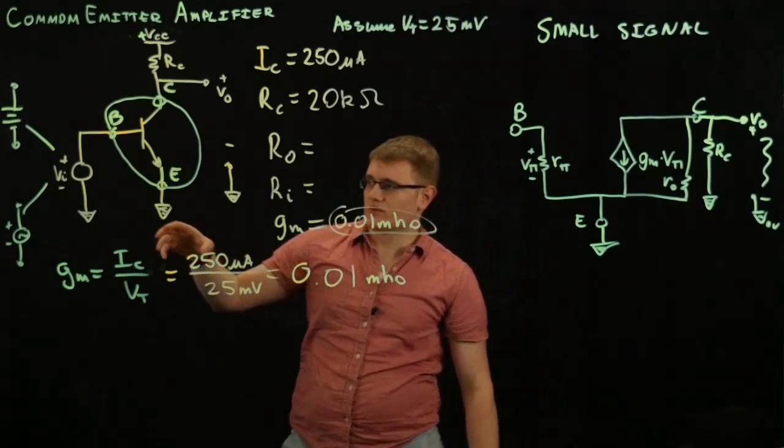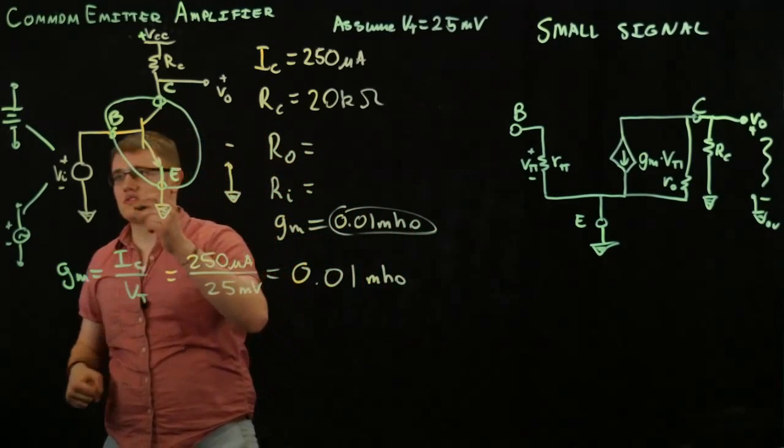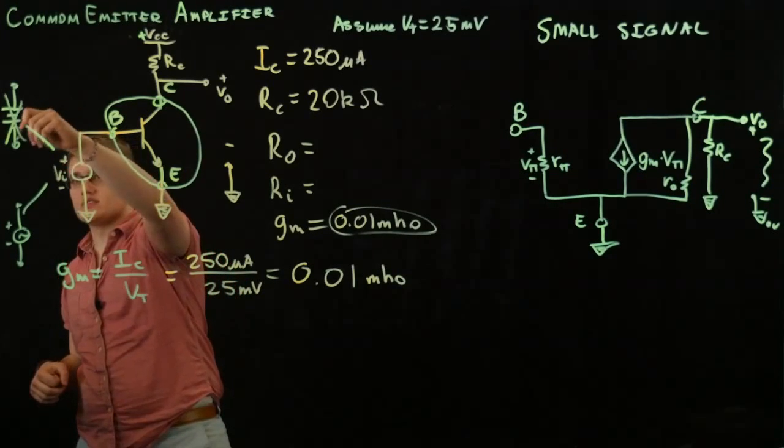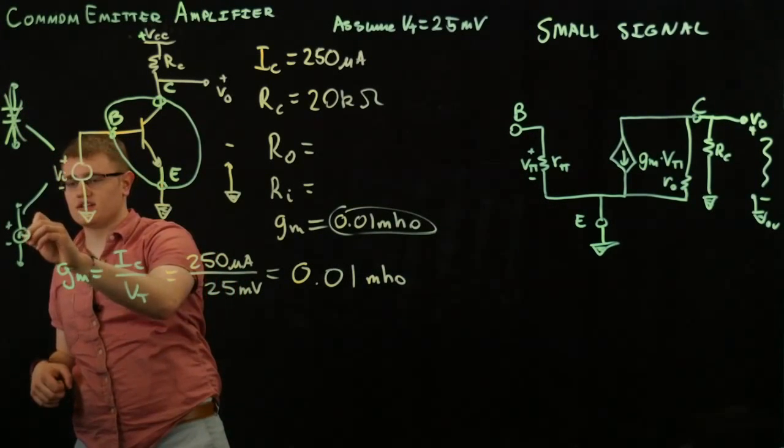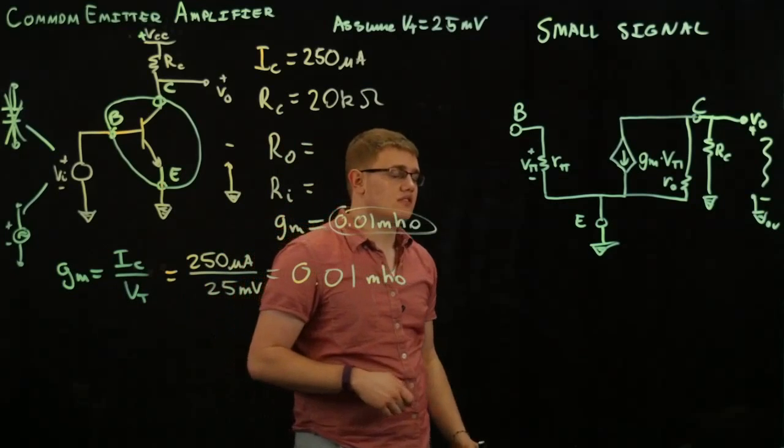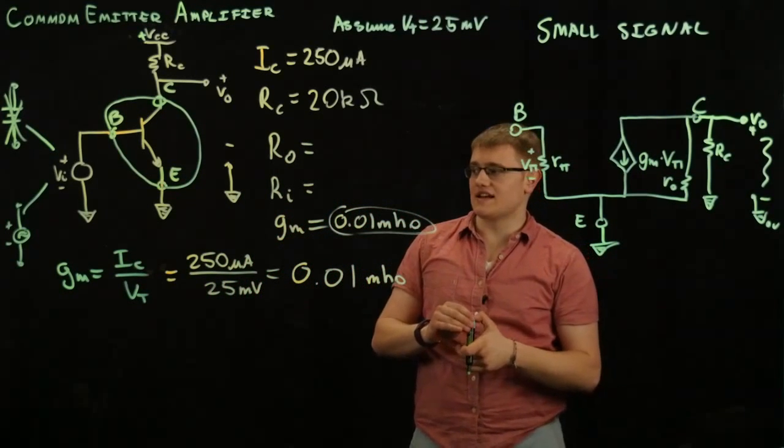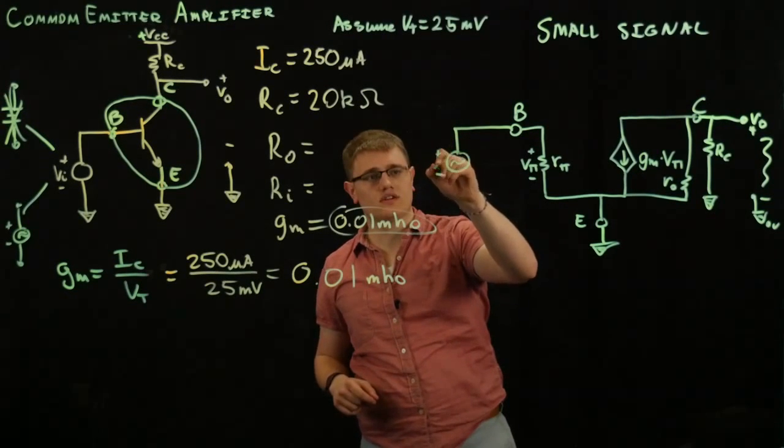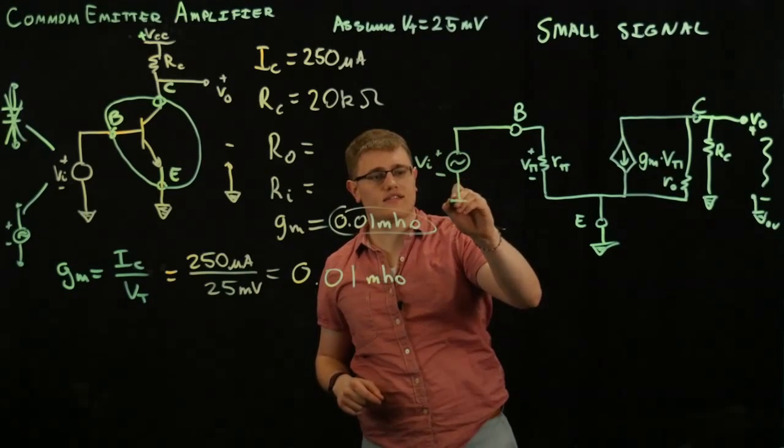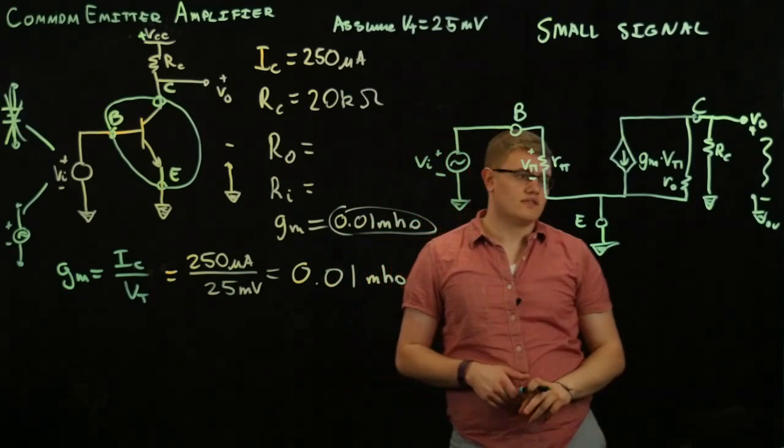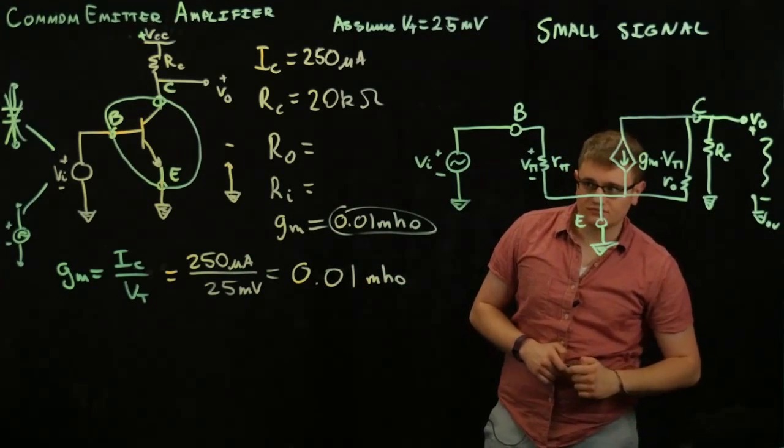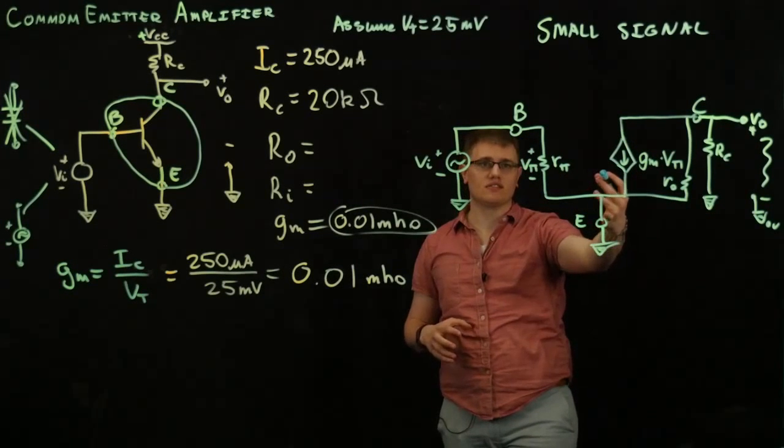And so, when we're doing small signal analysis, we're not looking at this because we're shorting that. So, it goes straight through there. We're just looking at the small signal. And so, what I'm trying to say is that we're just going to connect this to a V in that is an AC voltage source. And so, now we have our small signal circuit.